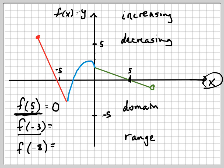So let's try f of negative 3. Again, go to negative 3 on the x-axis — negative 3 is right there. And what is the y value? Again, it's zero.